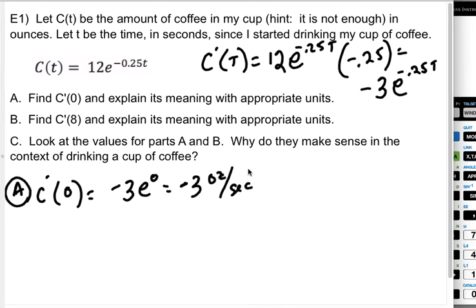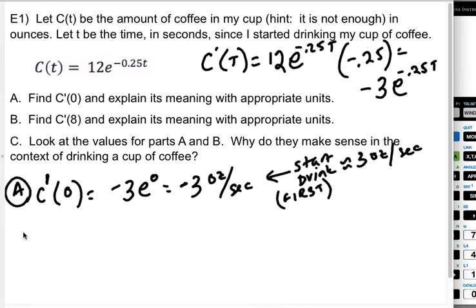And that's going to be ounces per second. So what does that mean? Well, that means that at the start of my cup of coffee, as I start, I start drinking at a rate of about 3 ounces per second. I am drinking 3 ounces per second. So at the start of the problem, my first sip, I am drinking 3 ounces per second. Because this is the rate of change of the amount of coffee in my cup. It makes sense that it's negative because I'm drinking the coffee out of my cup. So I am fully chugging my coffee first thing in the morning.